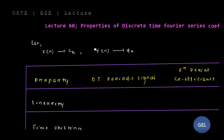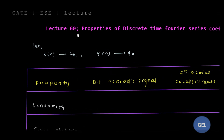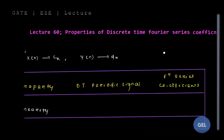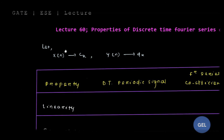Welcome to GATE ESE lecture. We are in lecture number 60 of Signals and Systems. Here we are going to discuss various properties of the discrete-time Fourier series coefficient, that is CK. In the previous video lecture we discussed CK, and in lecture 55 or 56 we understood properties of the continuous-time Fourier series coefficients. In the same manner we are going to define the properties of the discrete-time Fourier series coefficient CK.